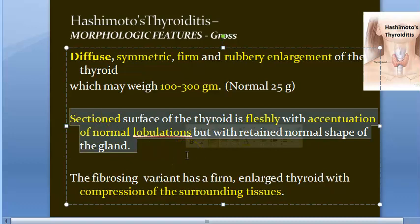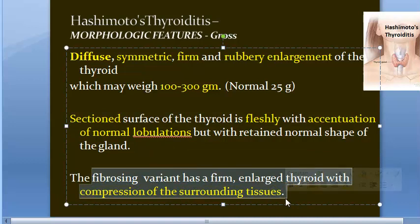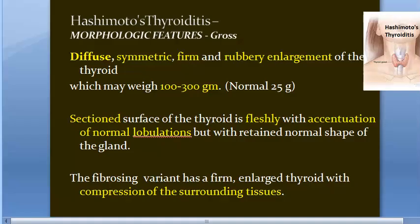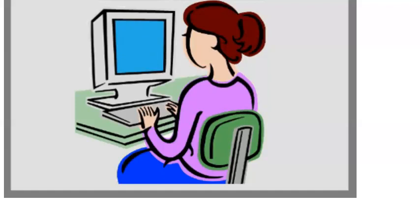On cut section, the thyroid gland is fleshy and there are accentuated lobulations due to fibrosis. The fibrous septa will be more thick. In the fibrosing variant, there is compression of the surrounding tissue. So to summarize the gross: from outside there is symmetric, firm, diffuse, rubbery goitrous enlargement; on cut section the fibrous septa are accentuated and the gland is fleshy; in the fibrosing variant there is surrounding tissue compression.